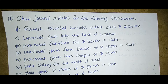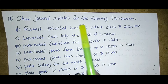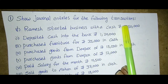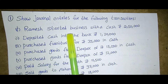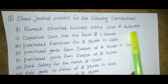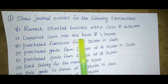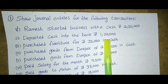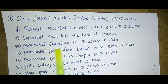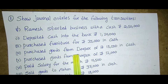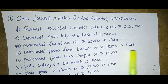Show journal entries for the following transactions: Ramesh started business with cash two lakhs fifty thousand. Second, deposited cash into the bank one lakh twenty thousand. Purchased furniture for thirty-five thousand in cash. Purchased goods from Deepak of fifteen thousand in cash.